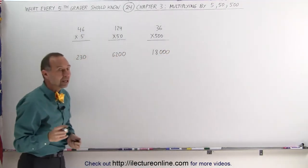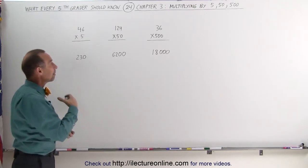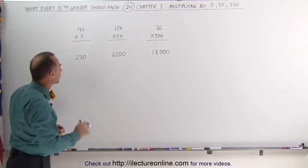So that's how you very quickly can multiply a number by 5, by 50, or by 500. Let's try some other examples.